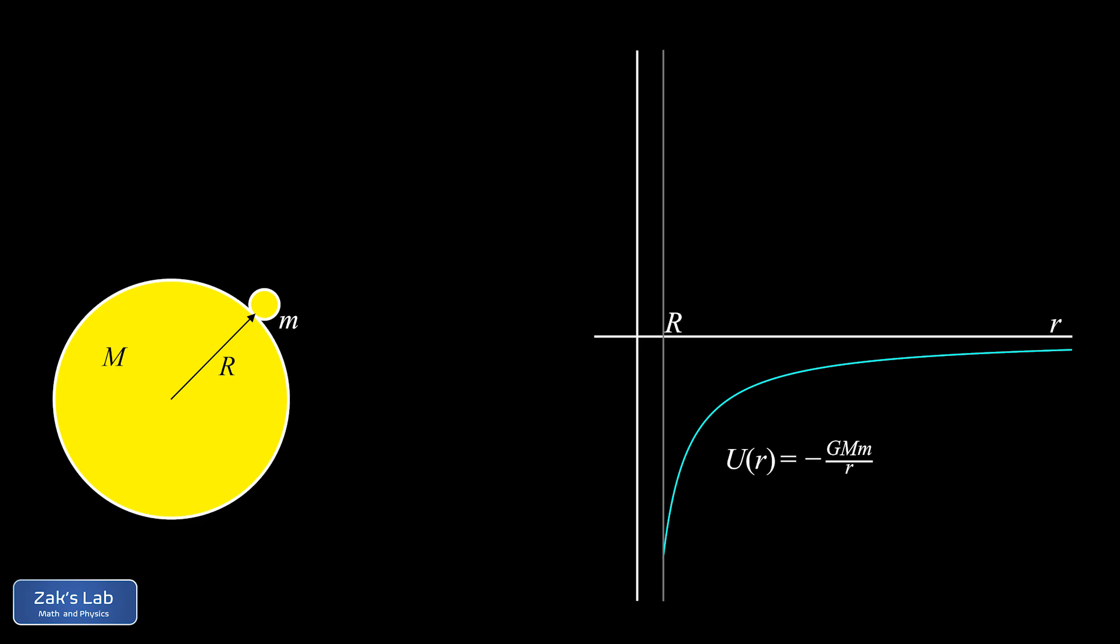Now the first thing I want to do here is consider the case where the total energy, in other words the kinetic plus the potential, is negative. So there's our total energy and that's a horizontal line because it's constant. Energy is conserved when we launch our tiny mass off the surface. So as our separation distance little r varies, that total energy is just going to stay the same.